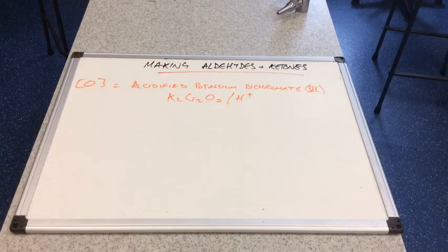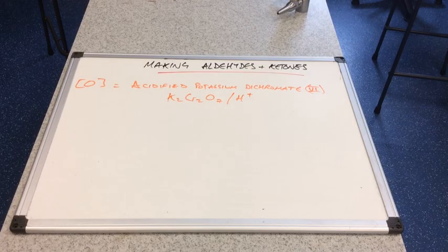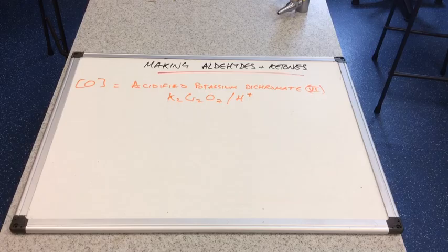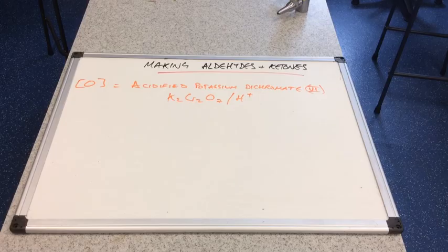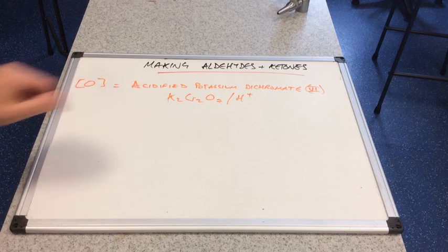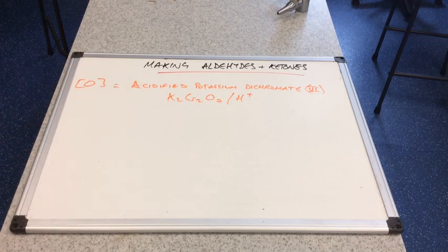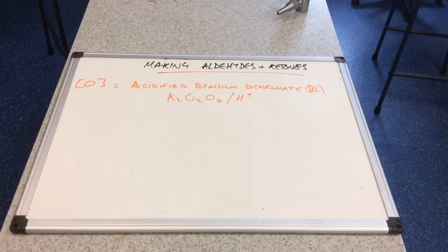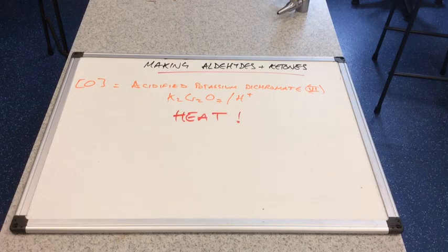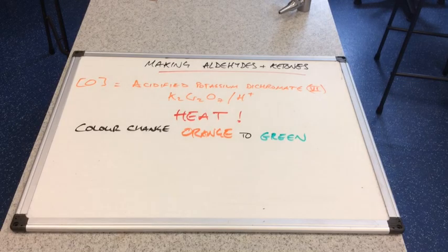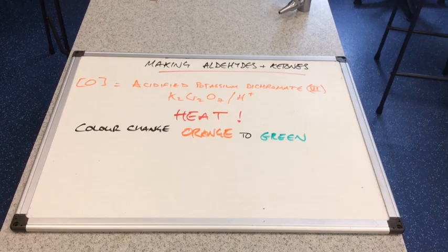Just a reminder for you, the oxidizing agent is acidified potassium dichromate(VI). And the formula of that is K2Cr2O7. The slash H+ is the acidified part. Why have I used an orange pen? Because it's an orange chemical. So there must be a source of heat. And if a reaction takes place, there's a color change. So the orange acidified potassium dichromate(VI) goes to green.